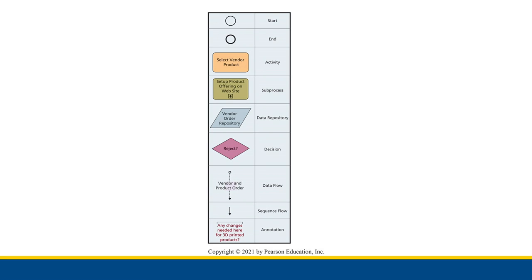A diamond refers to a decision. When we come across a diamond in the process diagram, we have to make a specific decision, and based on that decision, we follow a certain path that determines what actions to take. This allows for conditional thinking in our process — we don't just do all steps and finish; we can make decisions based on quality of materials, quantity of an order, and so on. The decision allows some amount of flexibility.